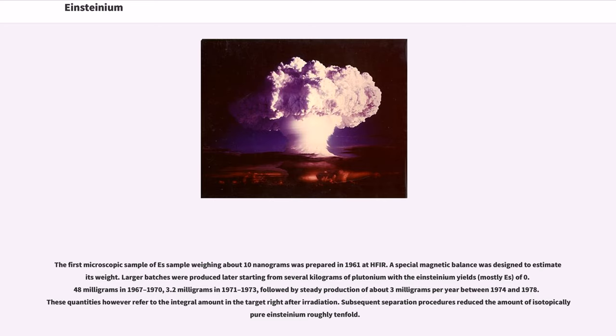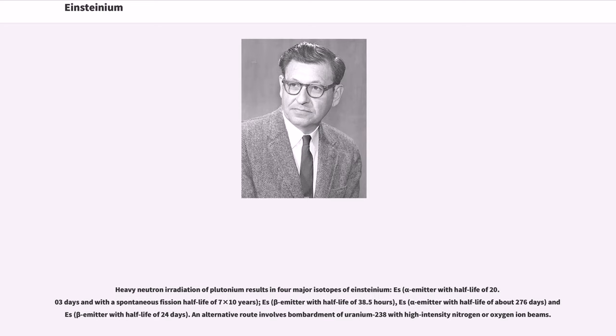Larger batches were produced later starting from several kilograms of plutonium with the Einsteinium yields, mostly Es-253, of 0.48 mg in 1967 to 1970, 3.2 mg in 1971 to 1973, followed by steady production of about 3 mg per year between 1974 and 1978. These quantities however refer to the integral amount in the target right after irradiation. Subsequent separation procedures reduced the amount of isotopically pure Einsteinium roughly tenfold. Heavy neutron irradiation of plutonium results in four major isotopes of Einsteinium: Es-253, alpha emitter with half-life of 20.03 days and with a spontaneous fission half-life of 7 times 10^15 years; Es-254m, beta emitter with half-life of 38.5 hours; Es-254, alpha emitter with half-life of about 276 days; and Es-255, beta emitter with half-life of 24 days.